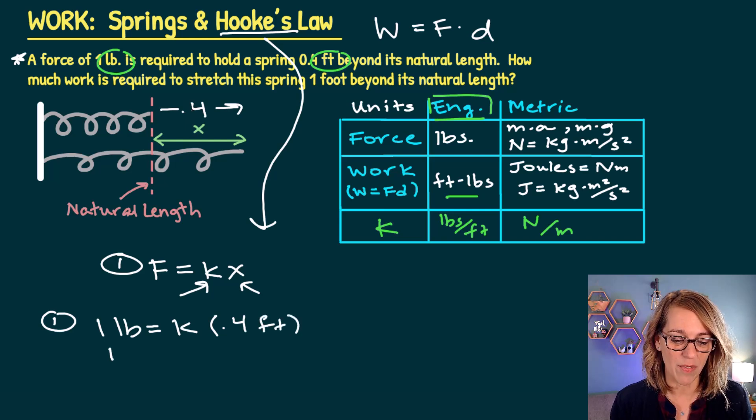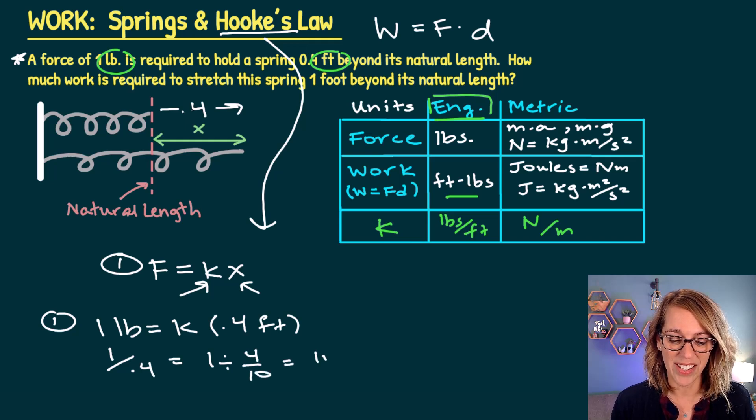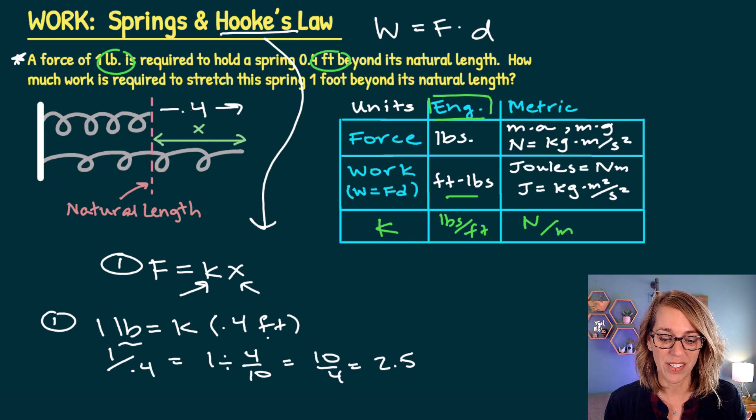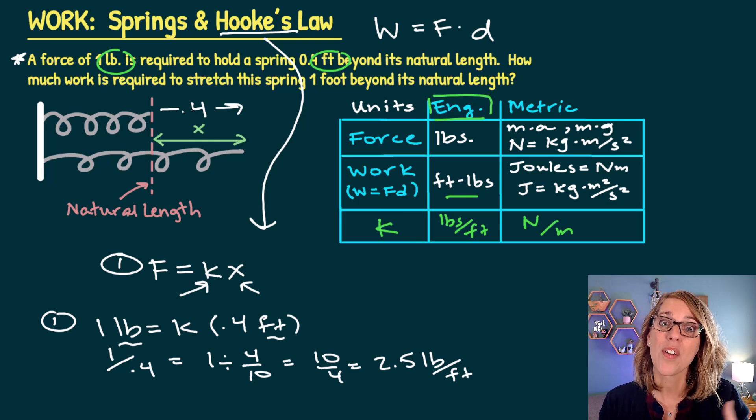If I do my division, I have one divided by 0.4, which is going to equal one divided by four tenths, also known as 10 fourths or 2.5. If you were to follow those units through, we had pounds divided by feet. And this does turn out to be pounds per foot. This is my spring constant. It's attached to the spring and I can use it to calculate the force for any given length stretched.